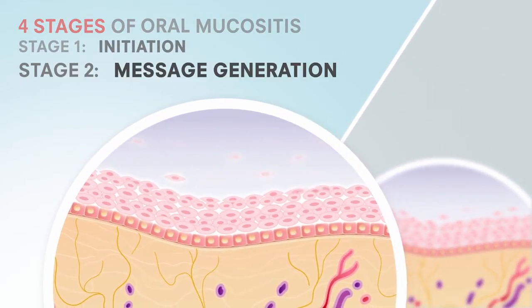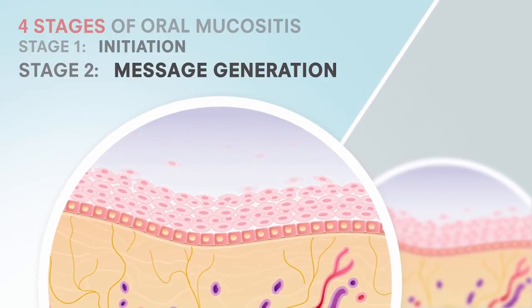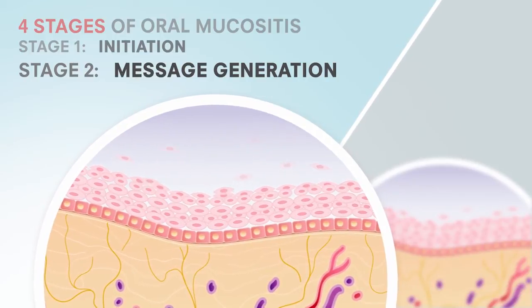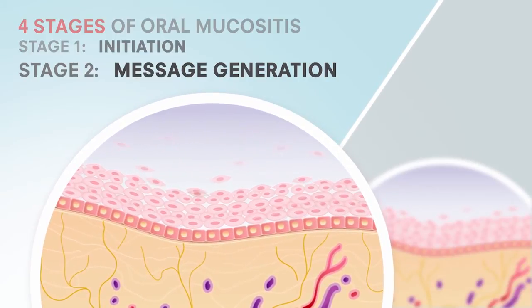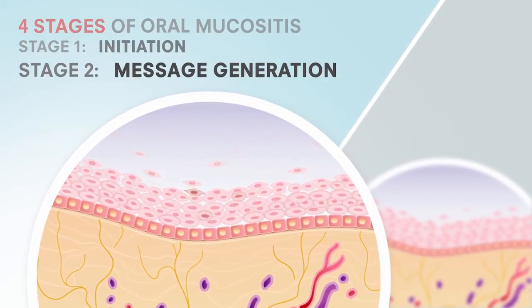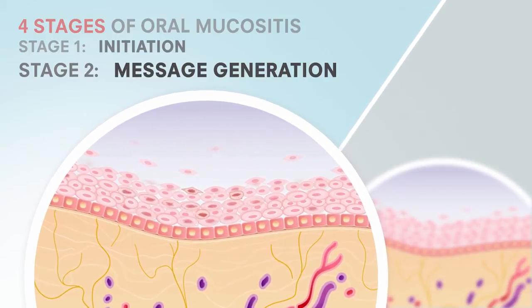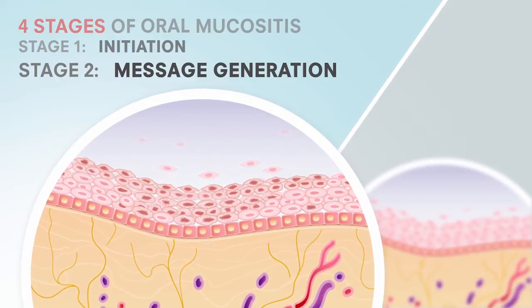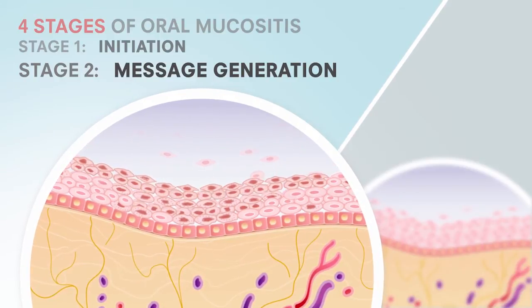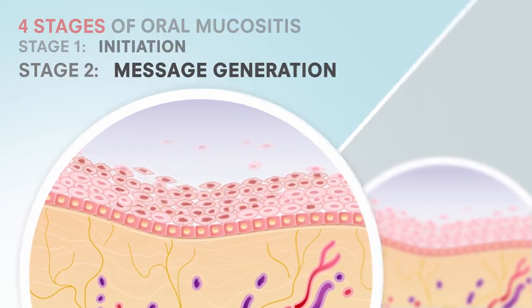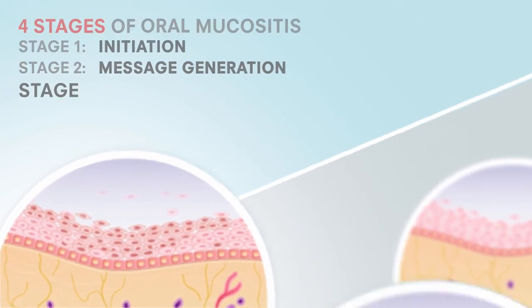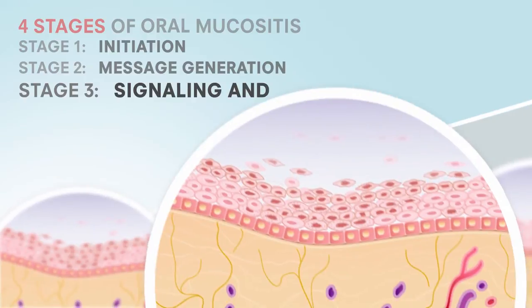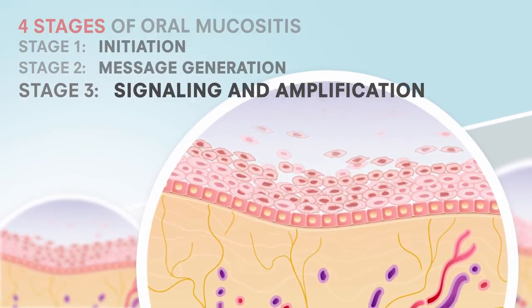During message generation, there is activation of enzymes that cause inflammation and also destroy submucosal cells and fibroblasts. Symptoms include redness and swelling.